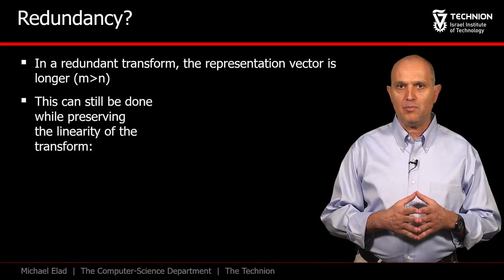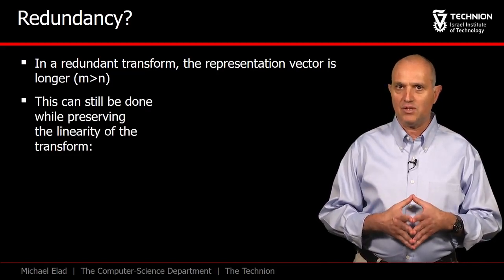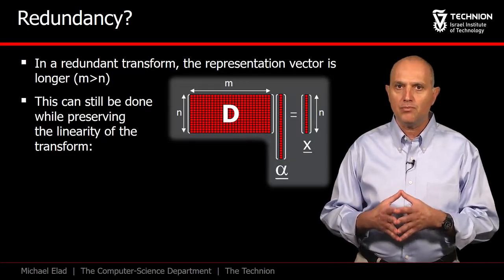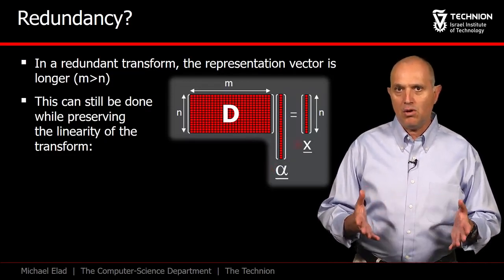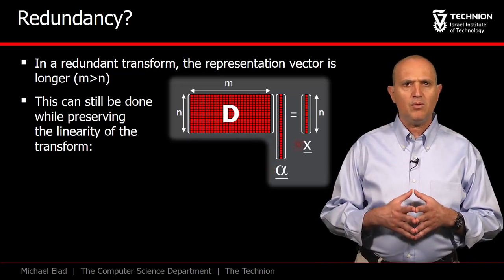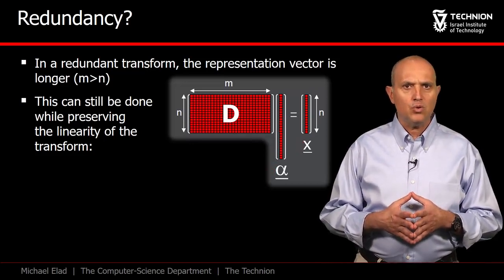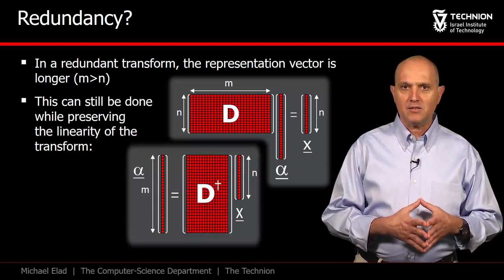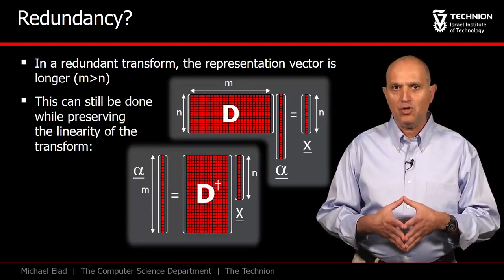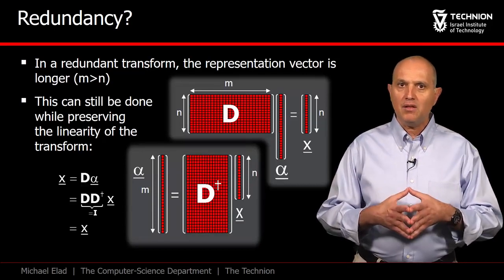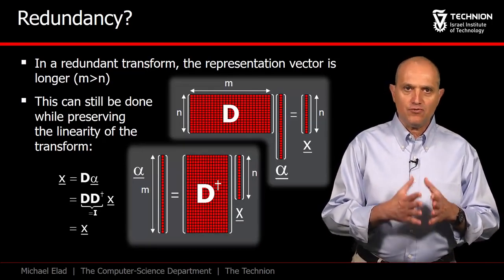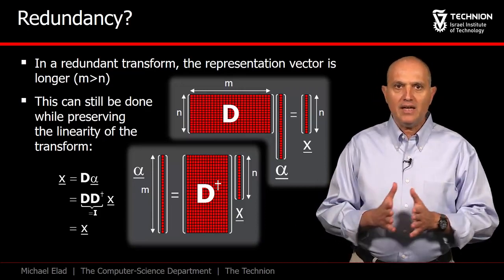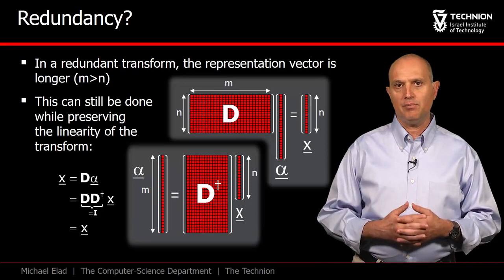We can have such a redundancy while preserving the linearity of the inverse transform. In this equation, the matrix D is now rectangular, with more columns than rows, and α is longer than x. What about the forward transform in this case? Could we suggest a linear form for it? The answer is positive — we can multiply x by the pseudo-inverse of D in order to get the representation. Under these definitions, if one starts from x, transforms it to α, and then transforms it back, we get x, implying that we get the desired invertibility.